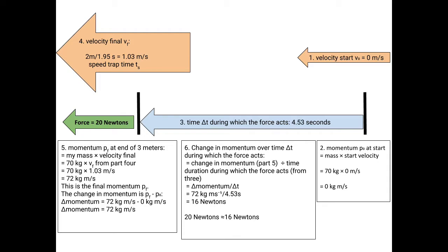This happened during 4.53 seconds. So in part six, I can take my change in momentum and divide by my change in time. That will give me 72 kilogram meters per second divided by 4.53 seconds, which yields 16 newtons. Newtons are kilogram meters per second squared. Newtons are a measure of force.